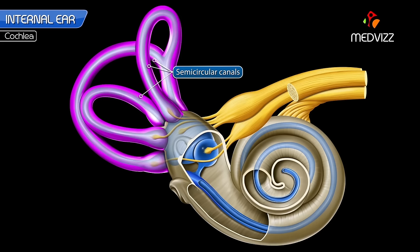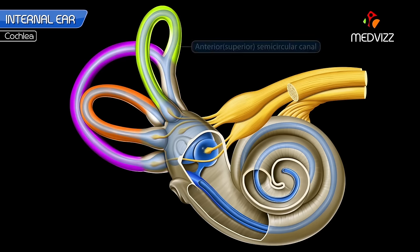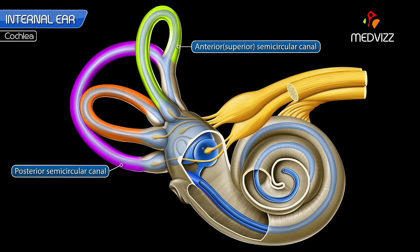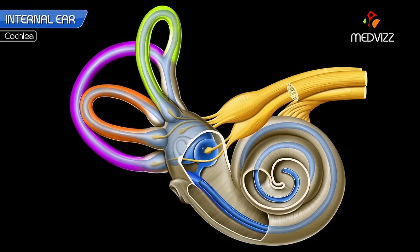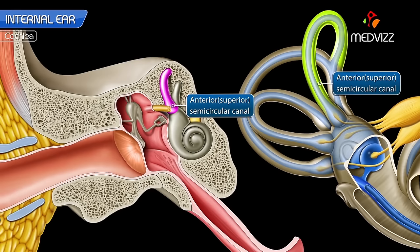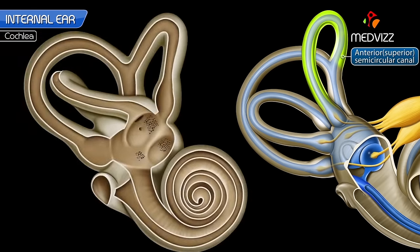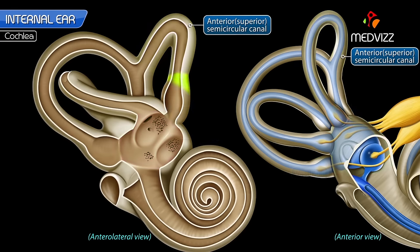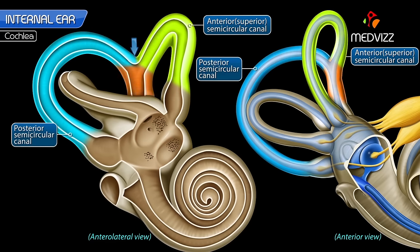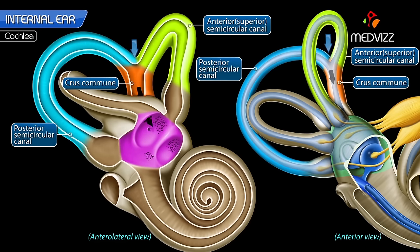There are three bony semicircular canals: anterior or superior, posterior, and lateral. They are situated in three planes at right angles to each other. Each canal is about two-thirds of a circle and is dilated at one end to form the ampulla. The anterior semicircular canal lies in a vertical plane at a right angle to the long axis of the petrous temporal. Its anterior ampullated end communicates with the vestibule anterolaterally. Its posterior non-ampullated end unites with the upper non-ampullated end of the posterior semicircular canal to form the crus commune, which opens into the vestibule.